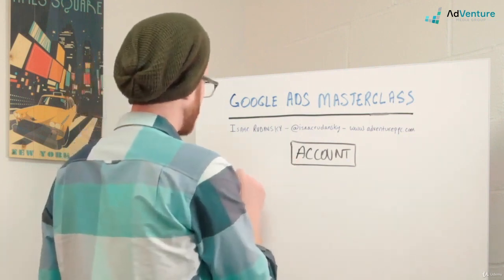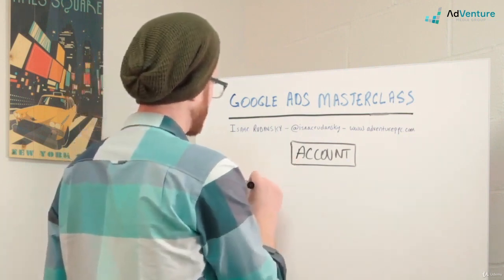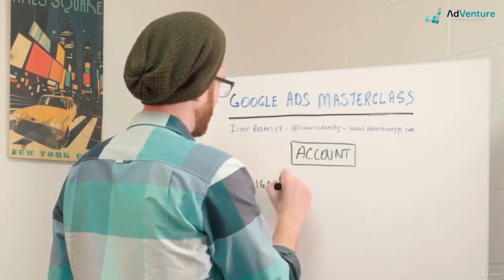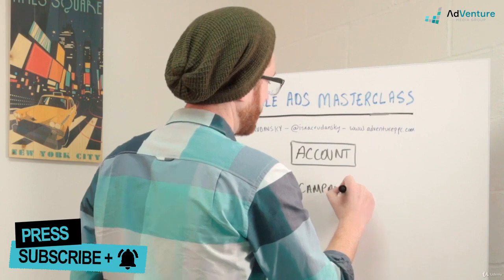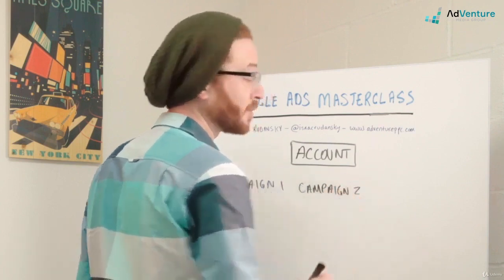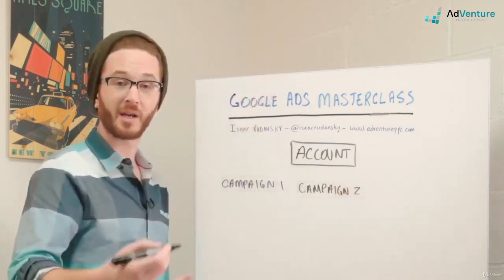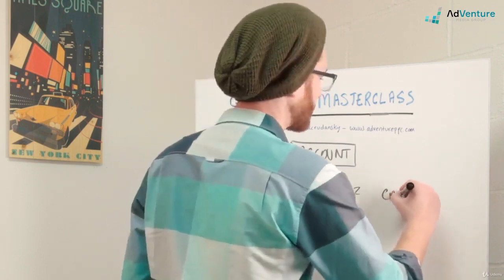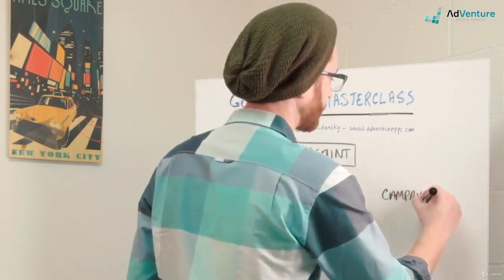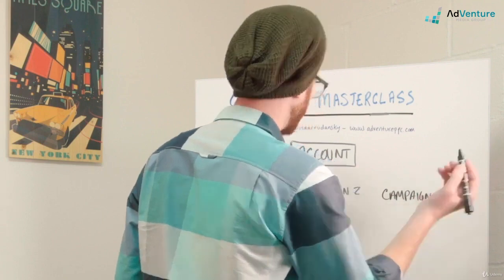Then you have campaigns under your account. You could have many different campaigns, hundreds of campaigns. You could have campaigns that are different campaign types. You could have search campaigns, display campaigns, retargeting campaigns, Google App campaigns, Google Shopping campaigns, so on and so forth. The point is campaigns are the next level down. So let's say we have three campaigns here.